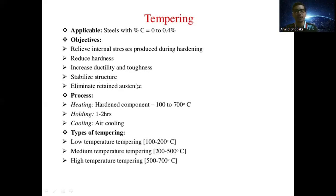The process of tempering involves three steps. First, heating: the hardened component is heated from 100°C to 700°C. Second, holding at that temperature for one to two hours. Third, cooling — air cooling (normalizing) to room temperature — so that the desired properties are achieved.